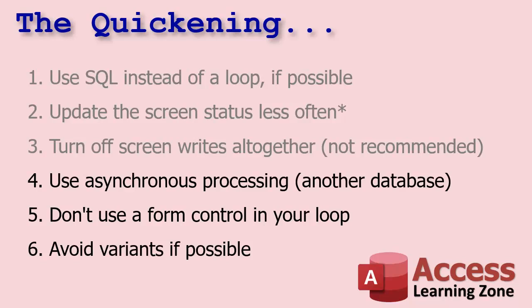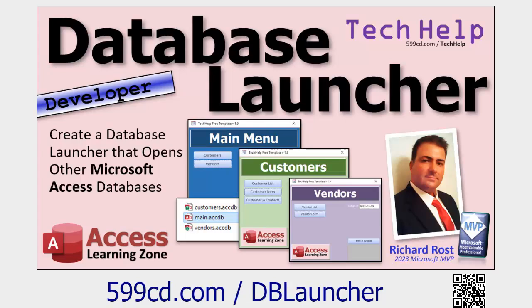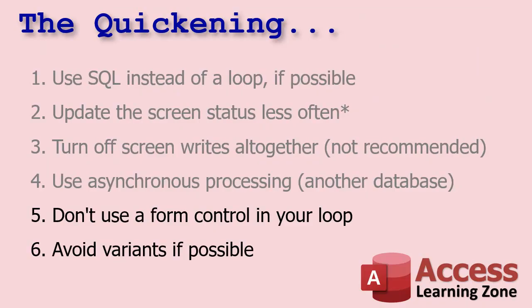I do that all the time myself. Here's a video that explains how to launch another database from your main database if you're interested. Next tip: try not to use form controls in your loop — bound controls especially, if it's bound to a table. It's much faster if you stick things in a memory variable. Read the form value into memory and then perform the loop on that declared variable. Don't work with form fields if you can avoid it. Also avoid moving around on forms using GoToRecord or GoToControl — if you need to loop through records, use a recordset.